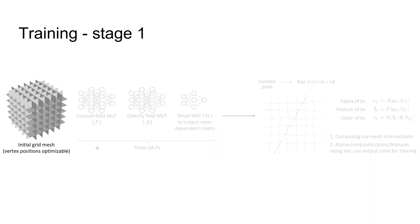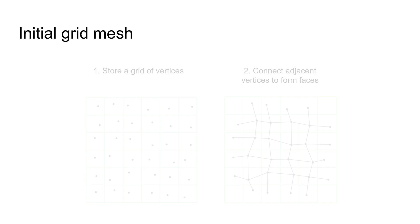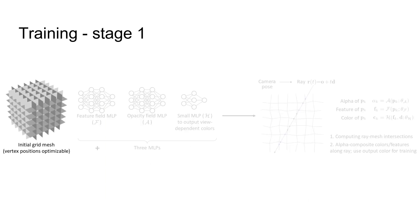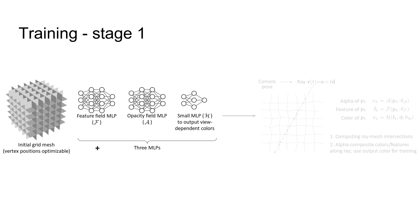To train our method, we use a mesh with optimizable vertex positions to represent the geometry of the scene. The mesh is constructed by storing a grid of optimizable vertices and then connecting adjacent vertices to form faces. We use MLPs to store the properties of points on the mesh surface. The feature MLP predicts the feature vector of any 3D point on the mesh, the opacity MLP predicts the point's opacity, and the small MLP acting as a neural deferred renderer converts the per-point feature vector and viewing direction into a view-dependent color.